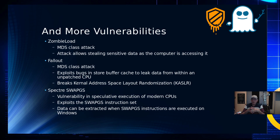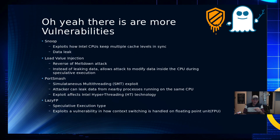You have Spectra, which is another speculative execution branch, and this one affected the swap GS instruction set on Windows. Then we had Snoop, another cache-level sync problem. Data Value Injection is a little bit different — this allows you to modify data inside of the CPU, not just extract it but also change it. There was PortSmash, and when that one happened, VMware issued a notice recommending that you turn off hyper-threading on Intel processors. I believe that is still up on their site.